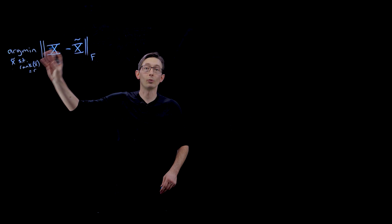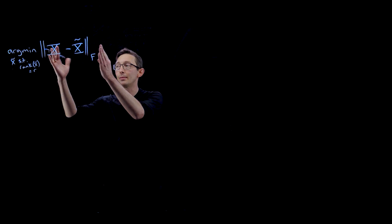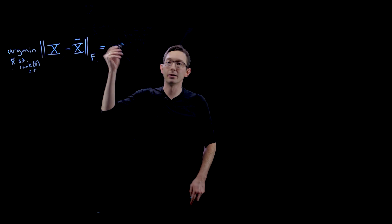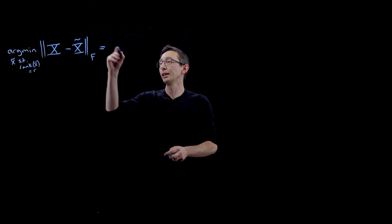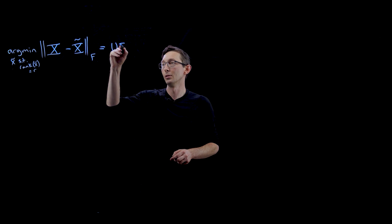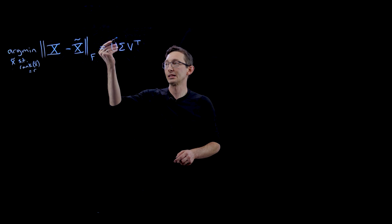The best rank R matrix X tilde that minimizes this is given by the R truncated singular value decomposition, this U sigma V transpose.